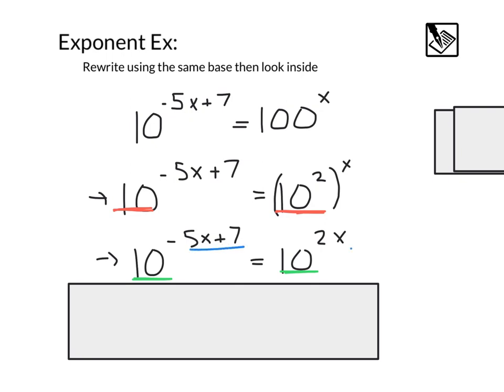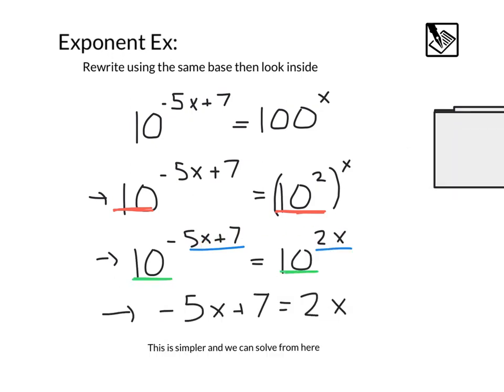So we can take this negative 5x plus 7 and set it equal to 2x, giving us an equation that looks much more familiar. And we can actually solve this complex exponential equation just by comparing the exponents and what they need to be.